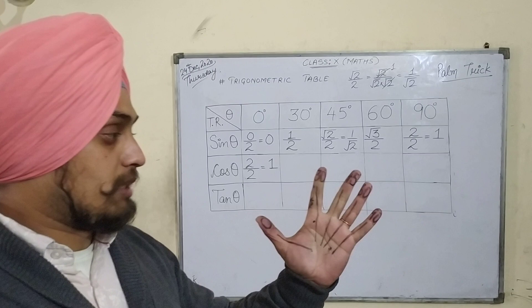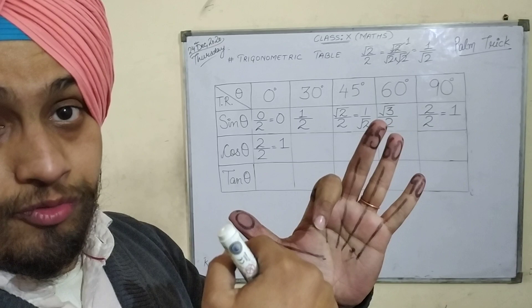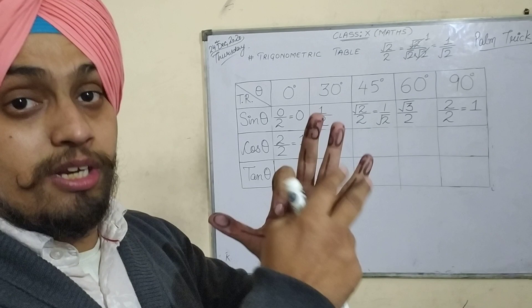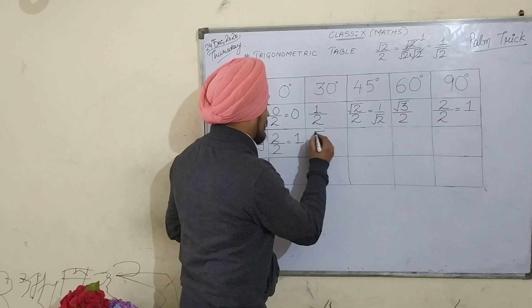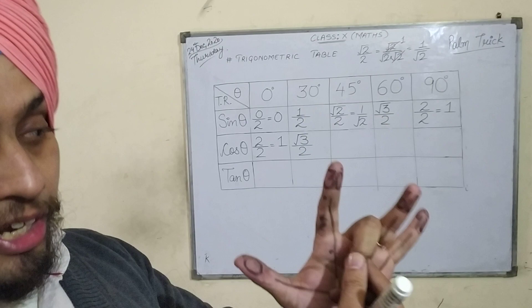Now let's calculate the value of cos 30 degree. For 30 degree I will bend this finger on which 30 degree is written. For cos theta I have to see to the right of it — not to the left. How many fingers are there to the right? 3. So I will take the square root of 3, which is √3, and divide that √3 by 2. So the value of cos 30 degree is √3 by 2.